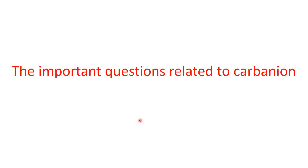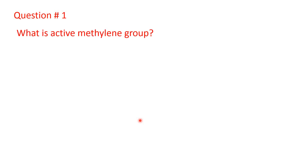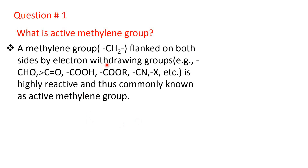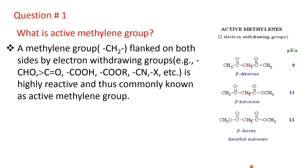Now, the important questions related to carbon ion. Question number one: what is active methylene group? Methylene group flanked on both sides by electron-withdrawing groups — for example, aldehyde, carbonyl ketone, carboxylic acid, ester, cyanide, halogen, etc. — is highly reactive and thus commonly known as active methylene group.